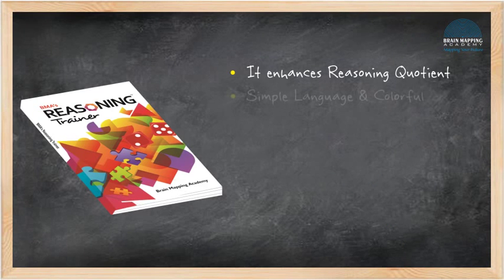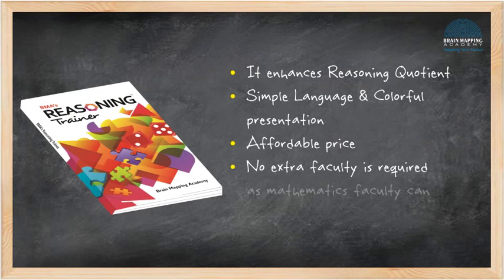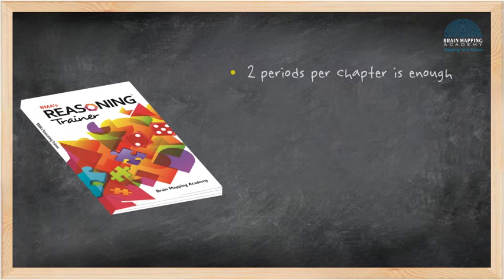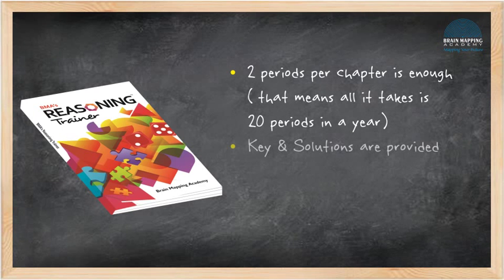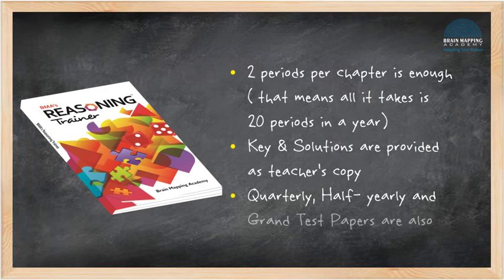Here are the salient features that Reasoning Trainer has to offer. It enhances reasoning quotient, simple language and colorful presentation, affordable price, no extra faculties required as mathematics faculty can handle the entire book. Two periods per chapter is enough. That means all it takes is 20 periods in a year. Key and solutions are provided as teacher's copy. Quarterly, half yearly and grand test papers are also provided.